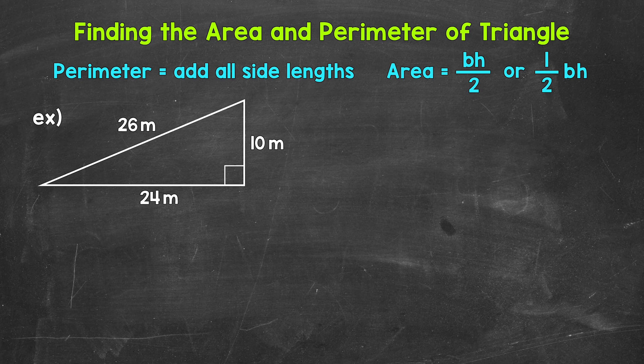For perimeter, we add all of the side lengths. For the area of a triangle, we use the formula base times height divided by 2, or ½ times base times height. Dividing by 2 and multiplying by ½ give us the same result, so either formula works and will give us the correct area. I'm going to use base times height divided by 2 in this video.